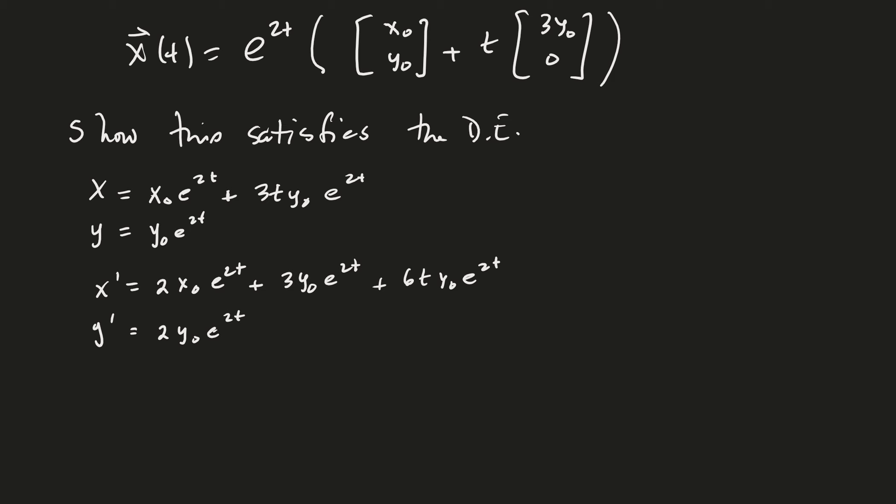Okay, so there's my derivative. And then we want to show that that is equal to 2, 3, 0, 2 times my x and y. You think it will be? Are you just going to trust me?